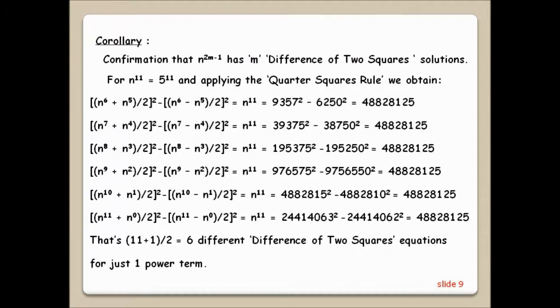This corollary confirms that for the algebraic identity n to the power 2n minus 1, we get m difference of square equations. So applied to 5 to the power 11, we get the following 6 difference of 2 squares equations. As predicted, all of which calculate out to give 5 to the power 11.